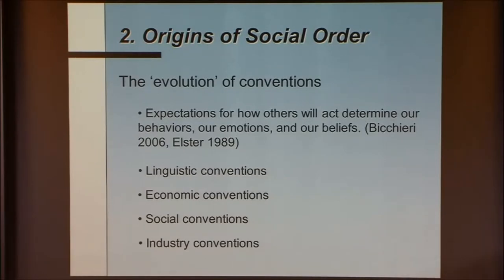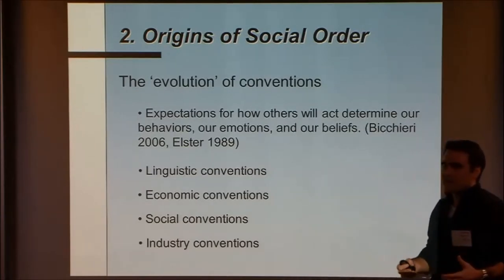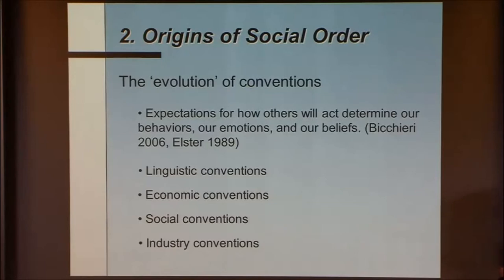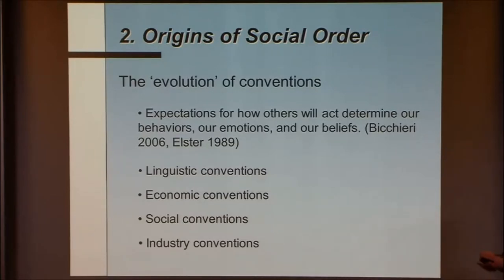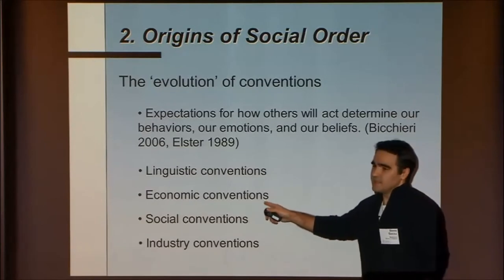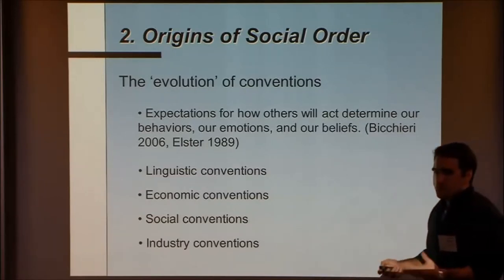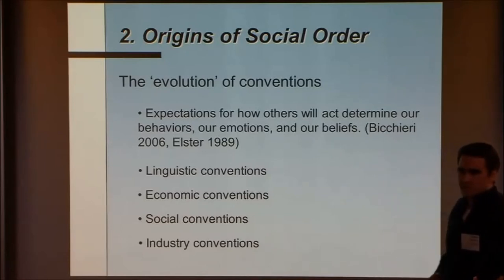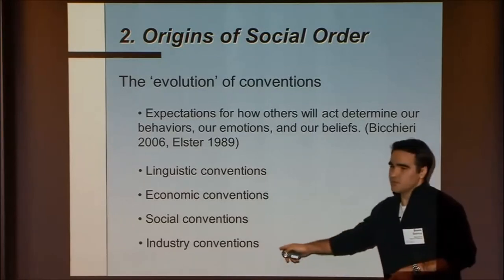Think about linguistic conventions — why do we all call junk emails 'spam'? Because everyone else does, and it becomes a convenient way of talking. Economic conventions, standards of fair bargaining, gender norms that have evolved in society and caused tension before coalescing — and industry conventions like Web 2.0 — these are all established through social interactions. Once established, everyone agrees. These norms emerge through endogenous social interaction, not through external authority.